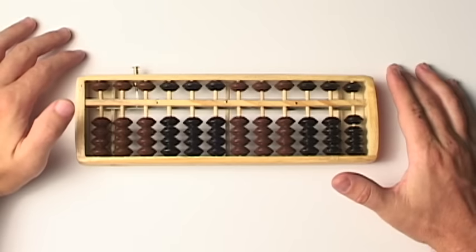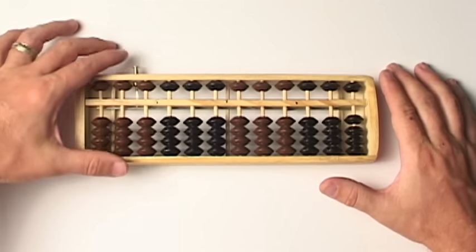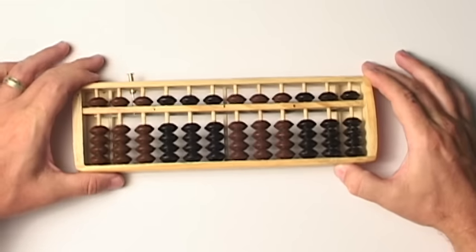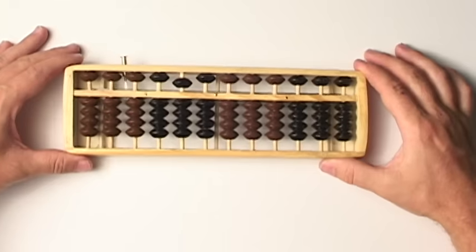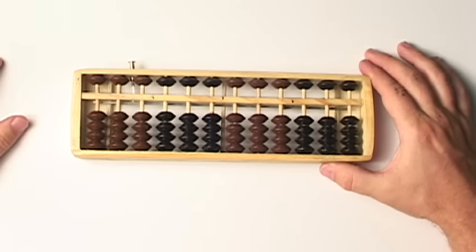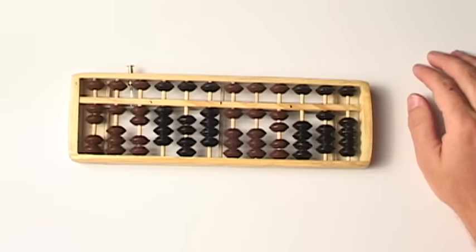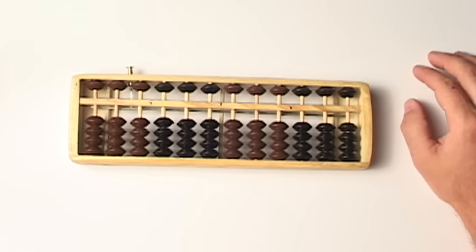Let me point out one other feature that this abacus has—not all of them will have it. This one comes with a handy little button right here. To clear your abacus, all you do is tip it down and hit that button. That clears it all.